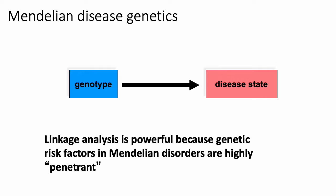Linkage analysis has historically been prevalent in part because it is pretty good at finding genetic causes of Mendelian disorders. A Mendelian disorder is generally speaking a disorder that is driven by single mutations in a single gene.